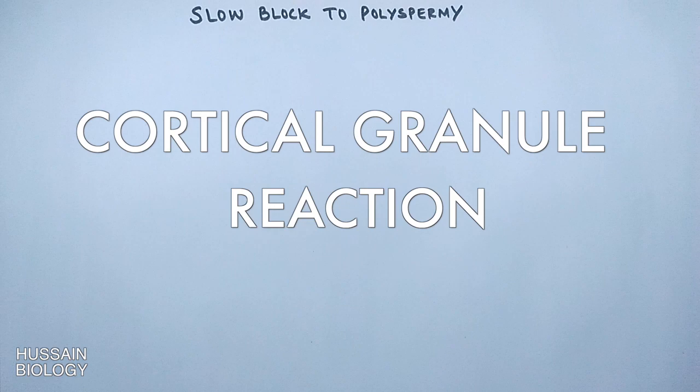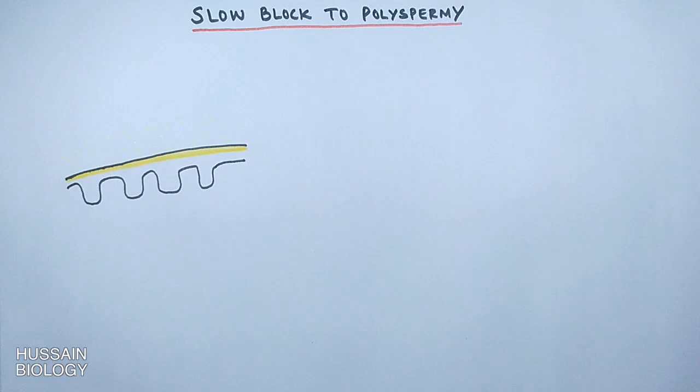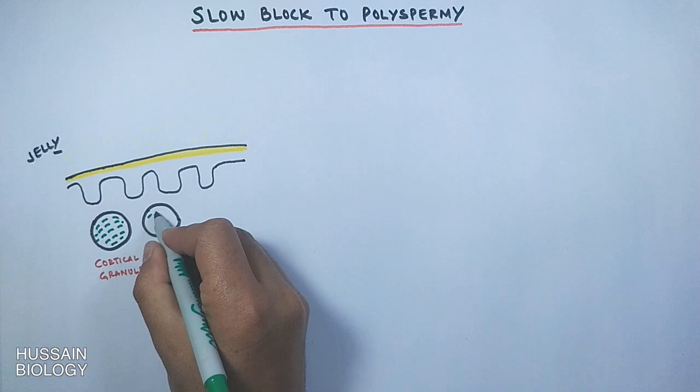In this reaction, a barrier is made in the form of a fertilization envelope on the egg membrane, which leads to blocking of additional sperms. In this diagram we can see the egg has jelly on the outside, cortical granules inside the cell, an egg cell membrane on the inside, and a vitelline membrane on the outside.